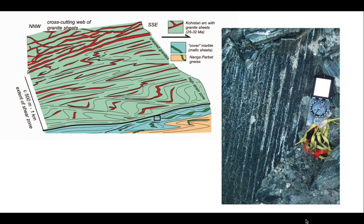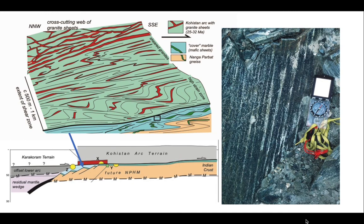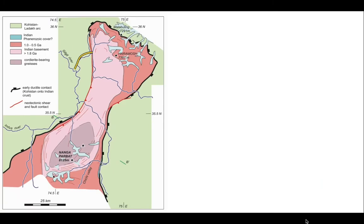The lower part of the Kohistan rocks — the amphibolites — are sheared out with a spectacular stretching lineation, which we can use to define the transport axis. We then add shear criteria to work out which way these rocks have moved. Overall, the Kohistan arc terrain has been carried onto the Indian continental crust, burying it, taking the cover sediments down into a metamorphic environment and turning them into marbles. The key question is: which way did the main mantle thrust move? Once we've resolved that, we can ask how the Nanga Parbat-Haramosh Massif — the Indian continental crust — came back up to the Earth's surface to make the structure we see today.